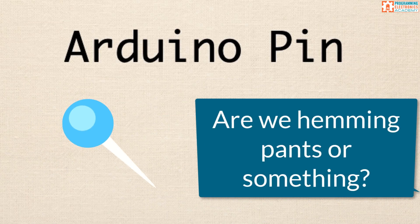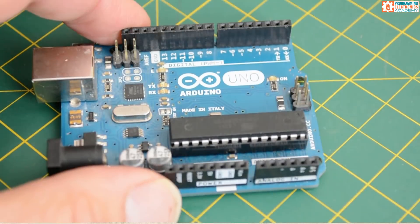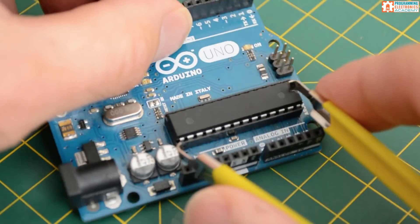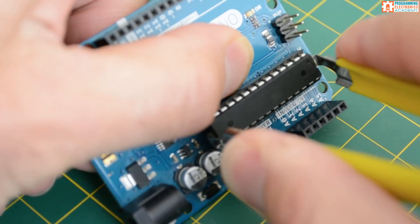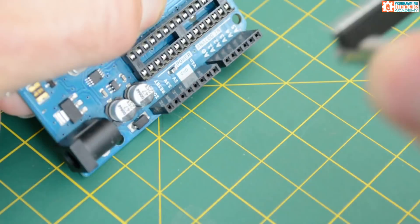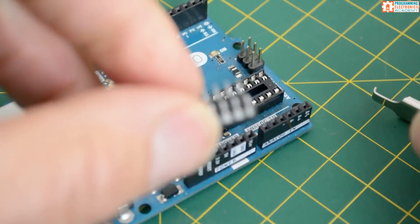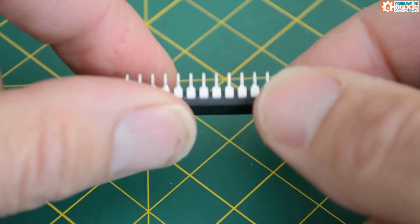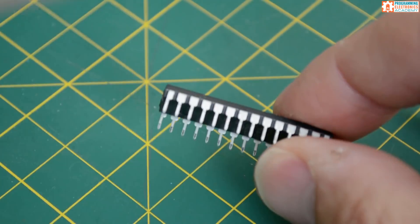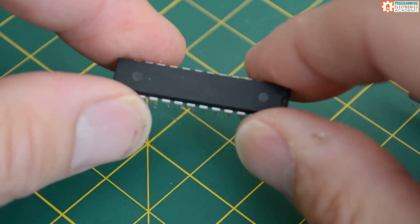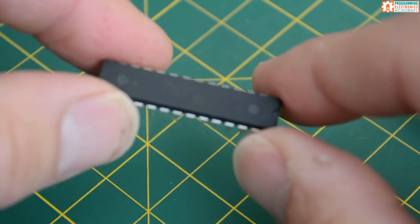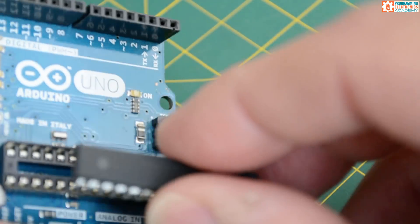The next one that's kind of strange is Arduino pin. What are we talking about when we say an Arduino pin? Well, if you look at a microcontroller, all around the edges there are these little metal prongs that stick out. These are the connections that go into the microcontroller.